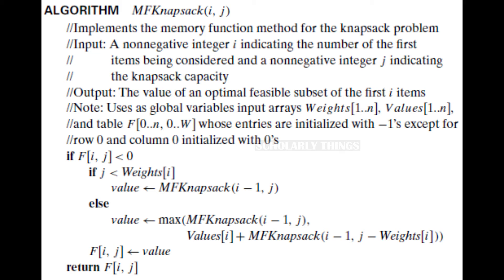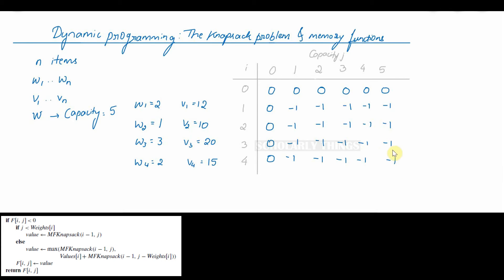If f of ij is less than 0, then if j is less than weights of i, then value is equal to mfk of i minus 1 comma j. Otherwise, value is equal to maximum of mfk of i minus 1 comma j and value of i plus mfk of i minus 1 comma j minus weights of i. Then put the value to f of ij, then return f of ij. We need to remember these two formulas throughout our calculations. We start with the last value and then backtrack and find out solutions to only those sub-problems that are necessary.